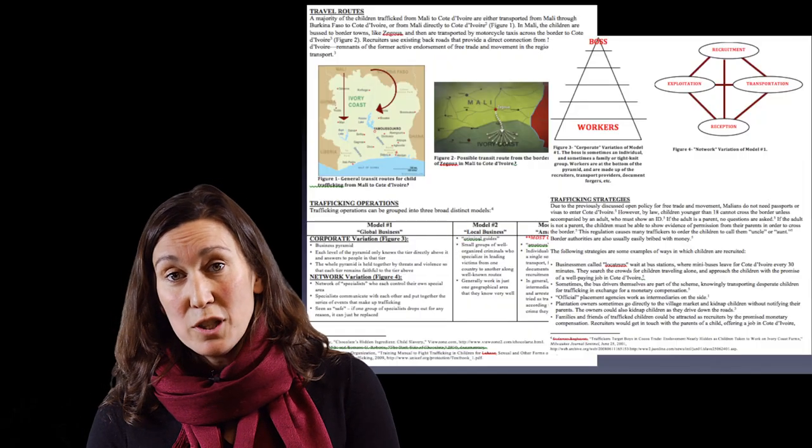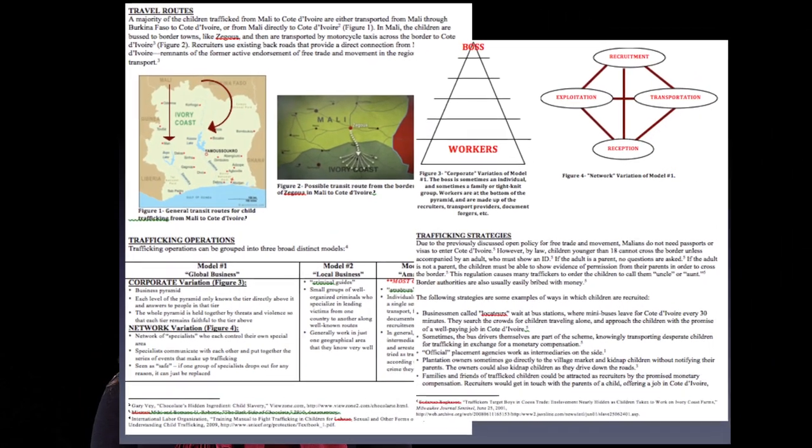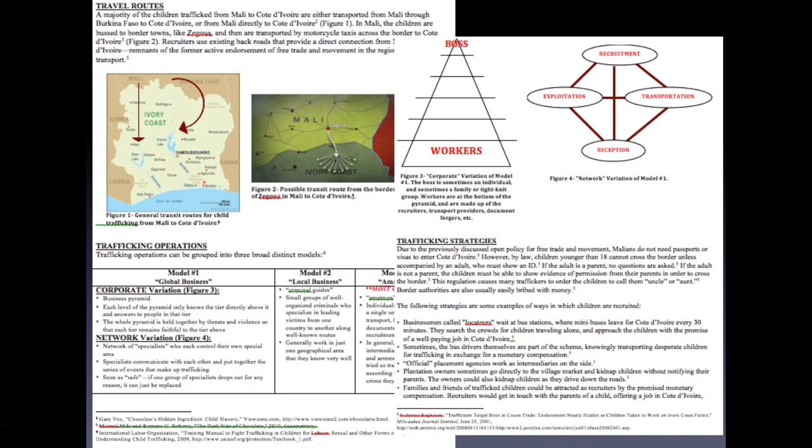Here's an example from the first year of the course where someone did a wonderful learning object. They actually include maps because they were looking at the travel routes. They include actually models and business models for how the trafficking occurs. Used a table to actually illustrate that effectively. They also use diagrams to demonstrate those different models of trafficking. And finally, obviously just written material that answered the question as well. And you can see that they definitely have referenced each of their main points quite well with footnotes at the bottom.